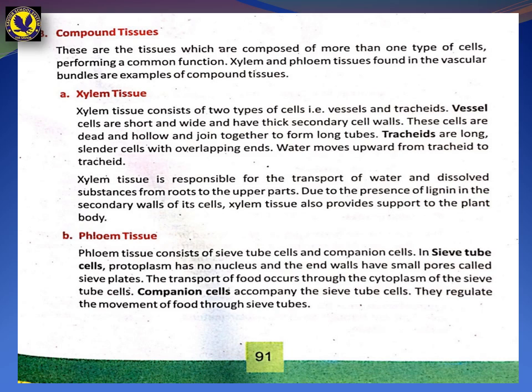Phloem tissue consists of sieve tubes — remember the name sieve tubes for phloem. The sieve tube cells have protoplasm but no nucleus. The end walls of sieve tube cells have small pores called sieve plates.